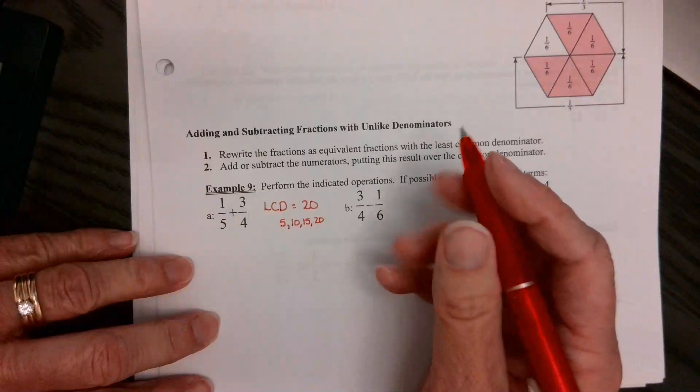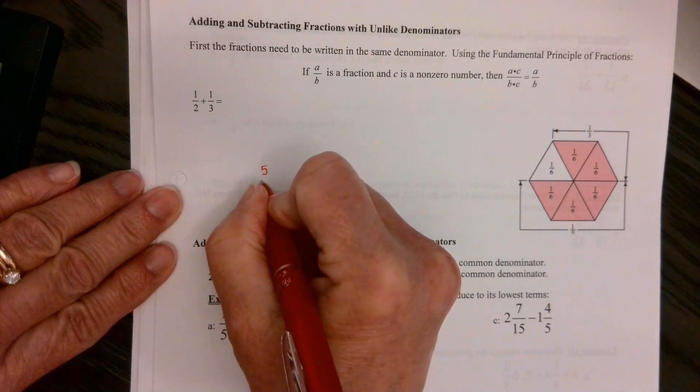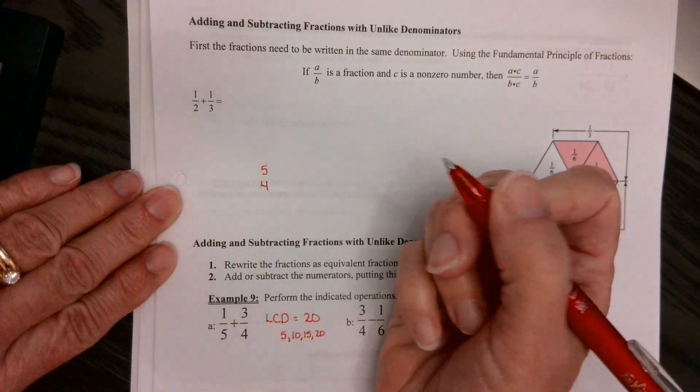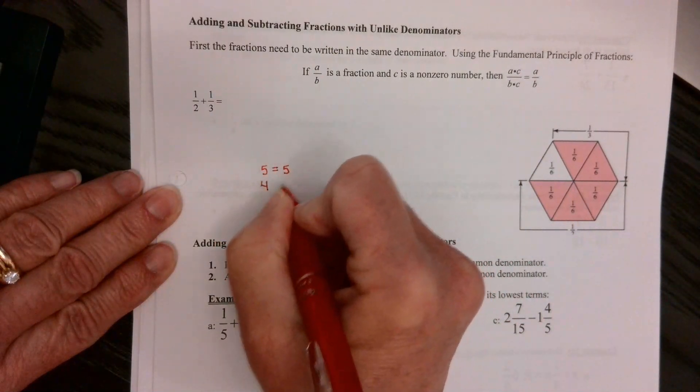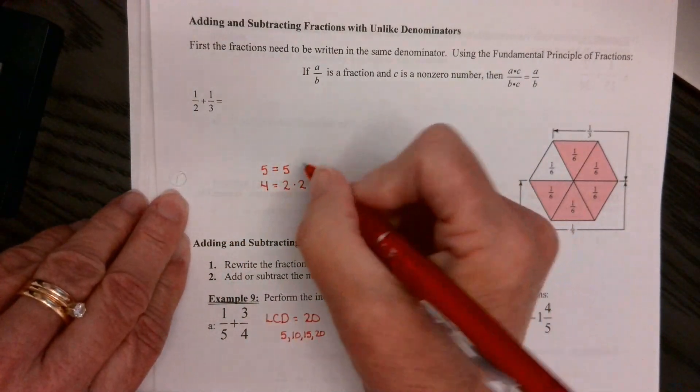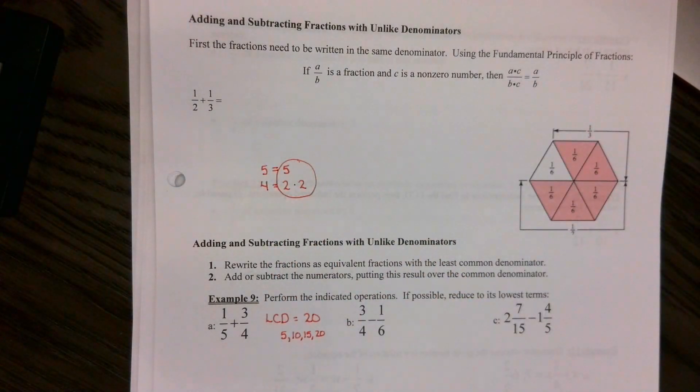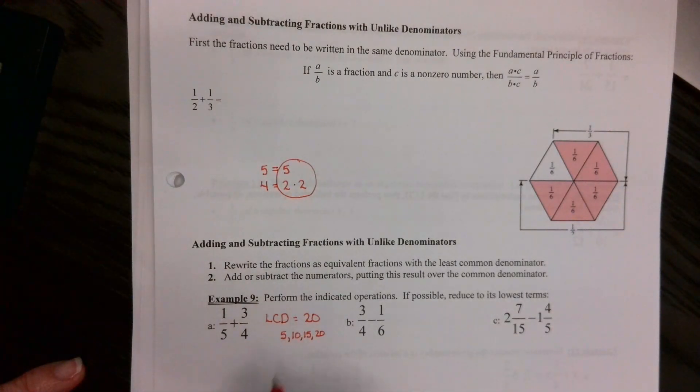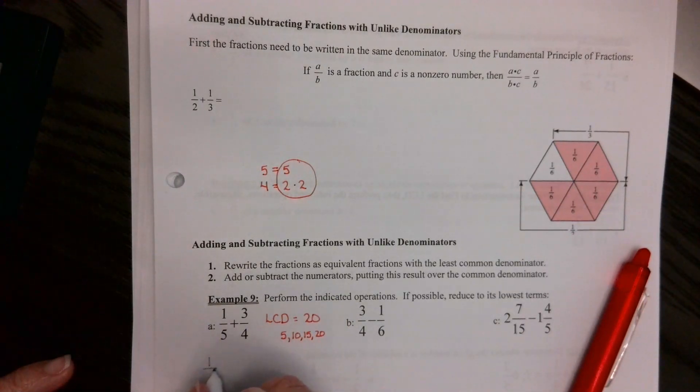The other way is do the prime factorization. And I'm going to do that up here between five and four. Well, this one's not a very good one to do a prime factorization because the way you do the factor for five, you're just going to get five. For four, it's two times two. See how they have nothing in common? So what you do is you multiply all your prime factors together and that's going to give us 20. Okay, so now that we found 20, we've got to rewrite our fractions. So I have 1/5 and I have 3/4.